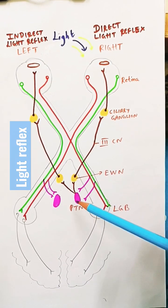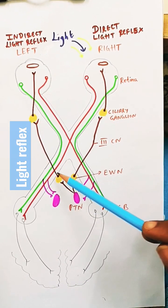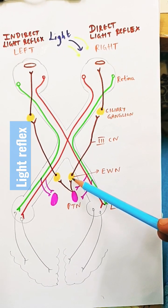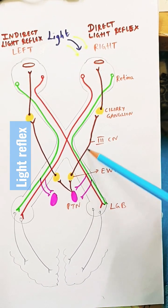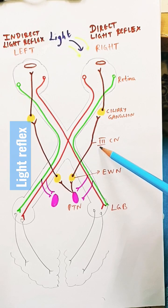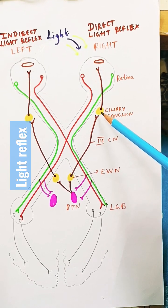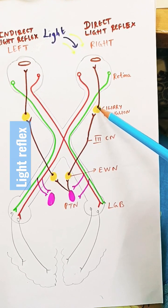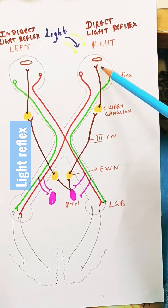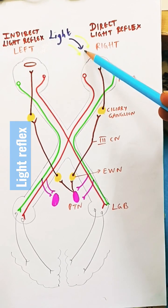There's a collateral given to the pre-tectal nucleus. Edinger-Westphal nuclei of both sides are stimulated. Via Edinger-Westphal nucleus, which is the nucleus for the third cranial nerve, the signal synapses at the ciliary ganglion. From ciliary ganglion, short ciliary nerves supply the sphincter pupillae and cause constriction of the right side pupil.